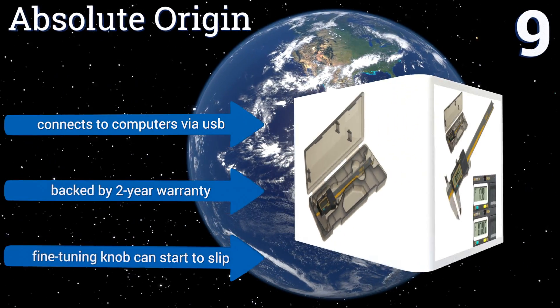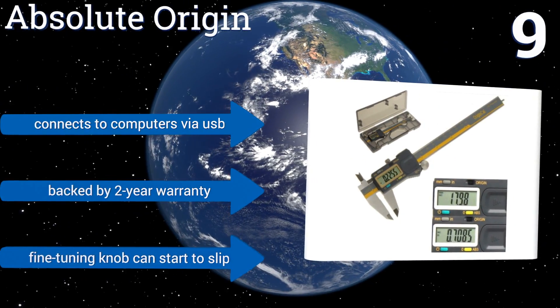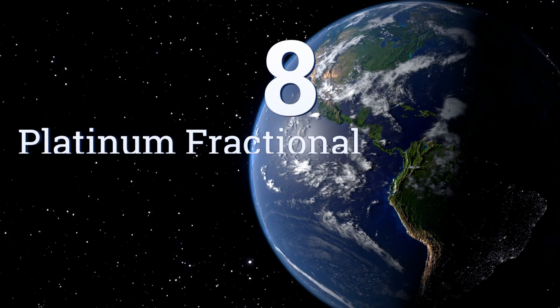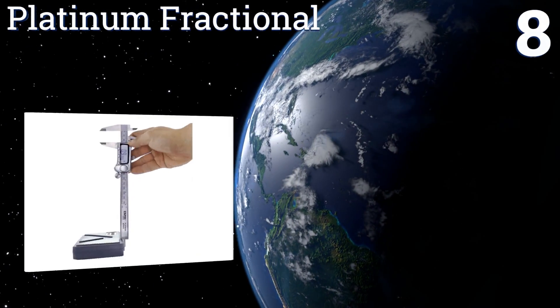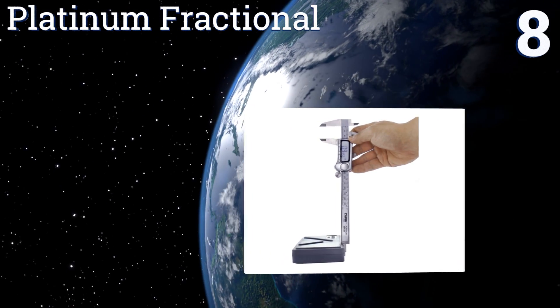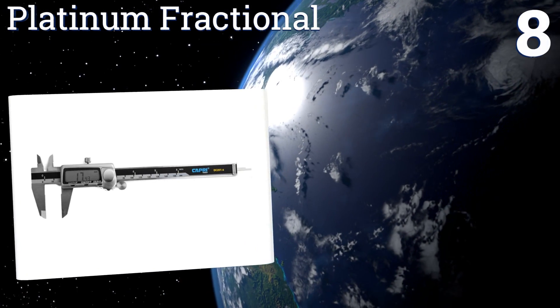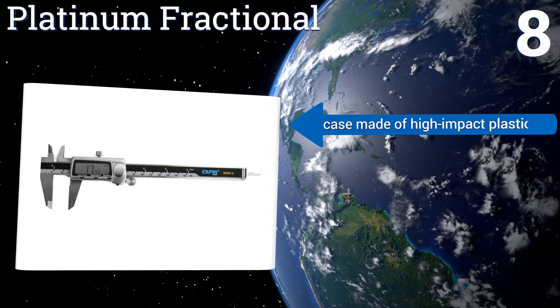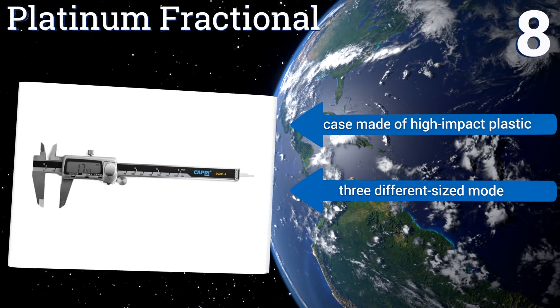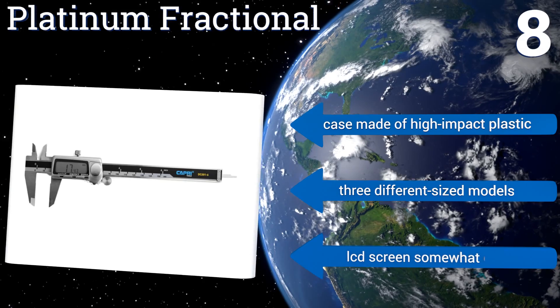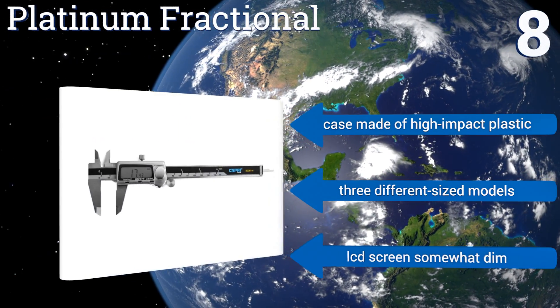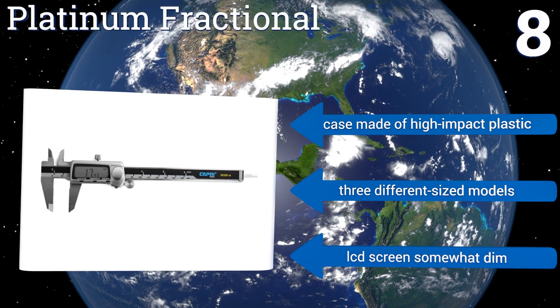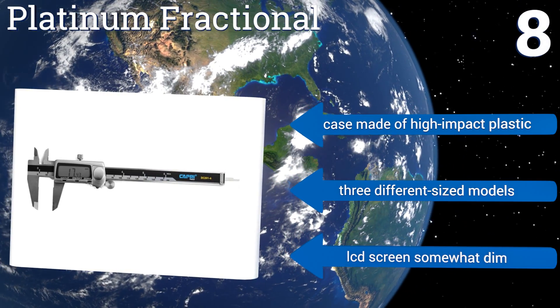Coming in at number eight on our list, capable of recognizing size differences as tiny as five ten thousandths of an inch, the Platinum Fractional has a hardened frame perfect for delivering precise slip resistant adjustments. It comes with a small screwdriver that makes replacing the battery fast and simple. Its case is made of high-impact plastic and it's available in three different sized models, however its LCD screen is somewhat dim.